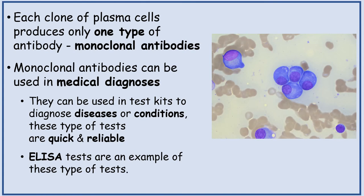Each clone of plasma cells produces only one type of antibody, so these are known as monoclonal antibodies. Monoclonal antibodies can be used in medical diagnosis — they can be used in test kits to diagnose diseases or conditions, and these types of tests are quick and reliable. ELISA tests are an example of these types of tests.